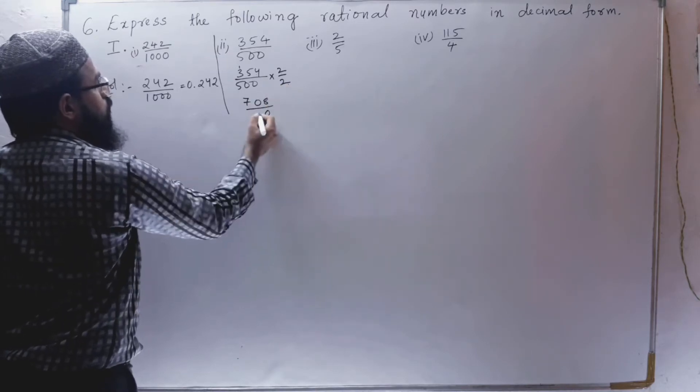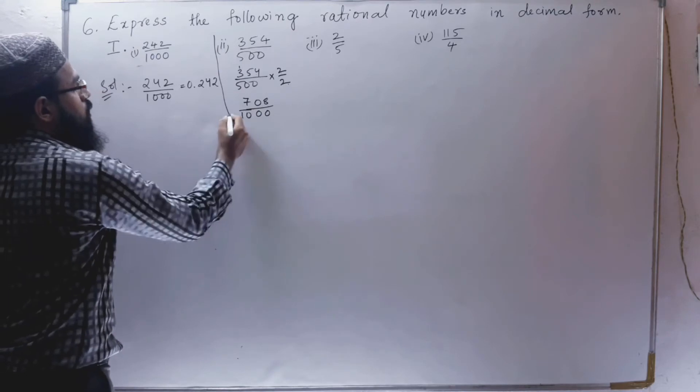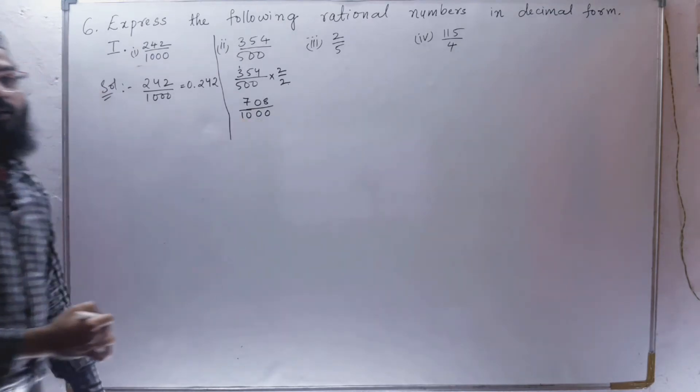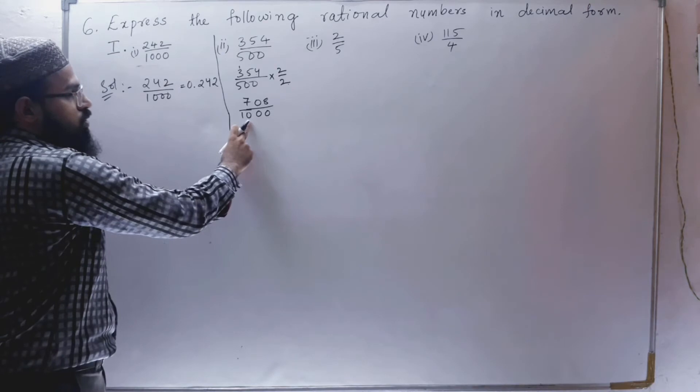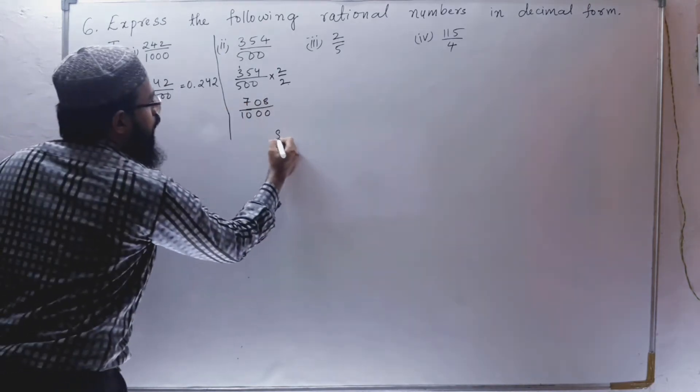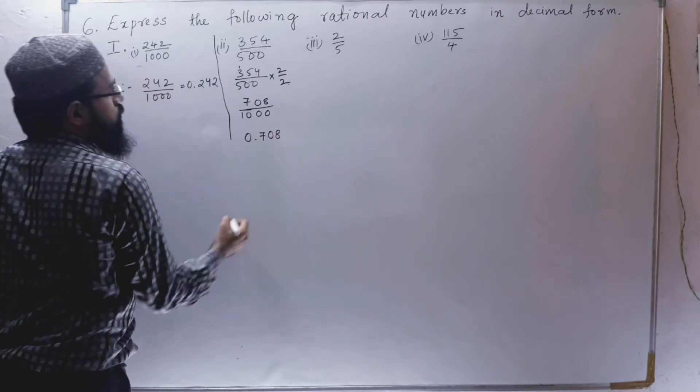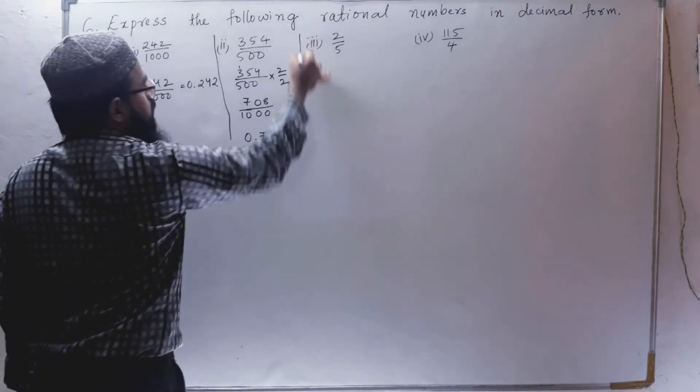2 times 0 is 0, 2 times 0 is 0, 2 times 5 is 10. So how many zeros are there in the denominator? There are 3 zeros. So we are going to put the decimal after 3 digits: 0.708. Second bit is over.